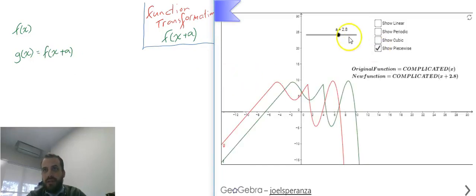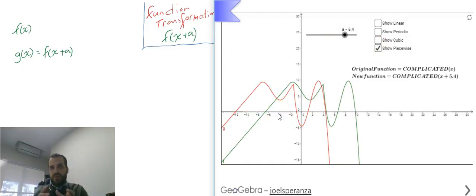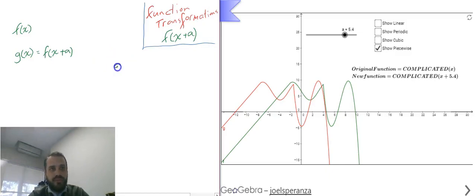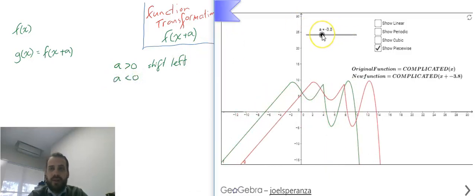Well, if I add the a value, you can see it moving left, which is the opposite of what you'd expect. So it's important to note that if a is greater than 0, then it's going to shift left. And if a is less than 0, no surprises here, it's going to shift right.